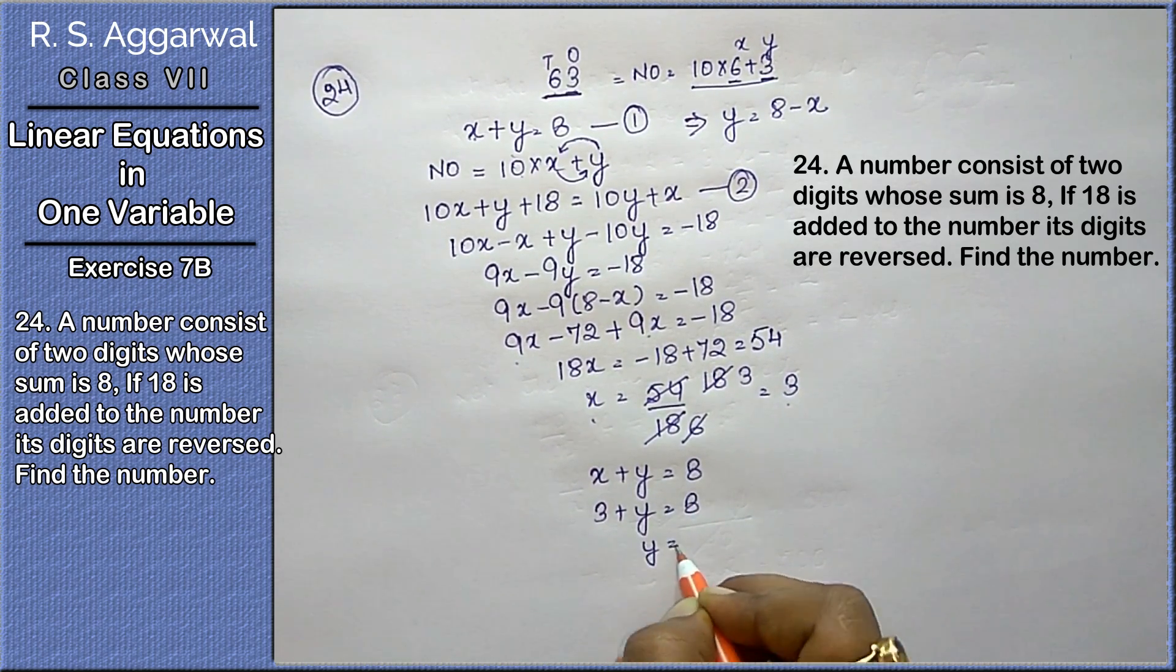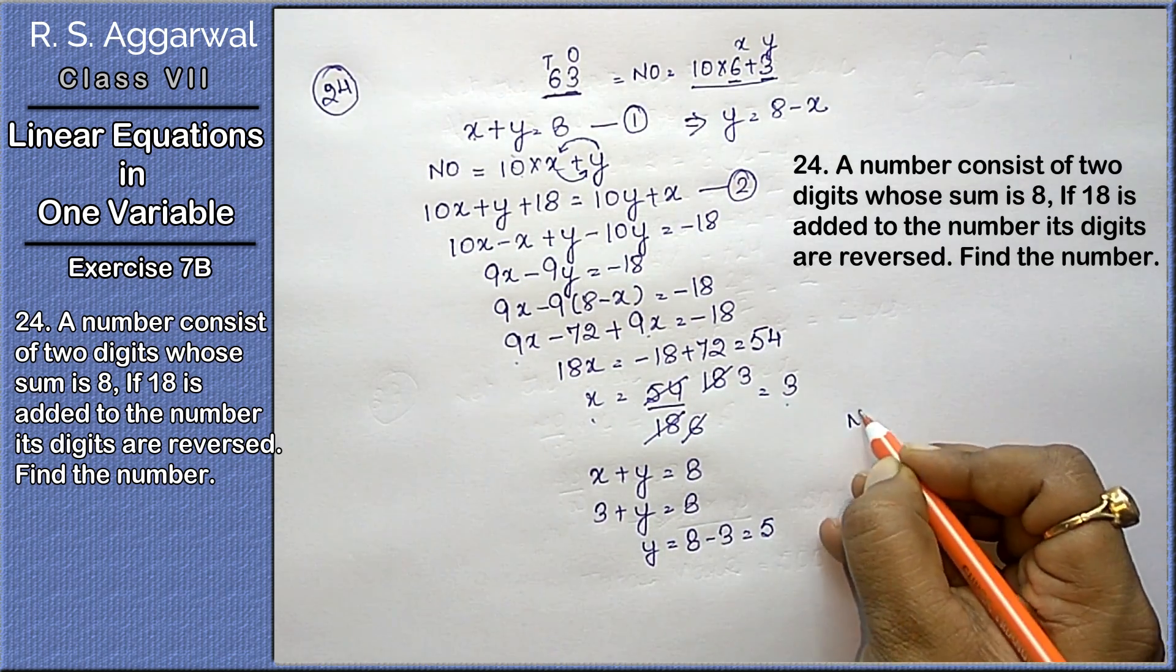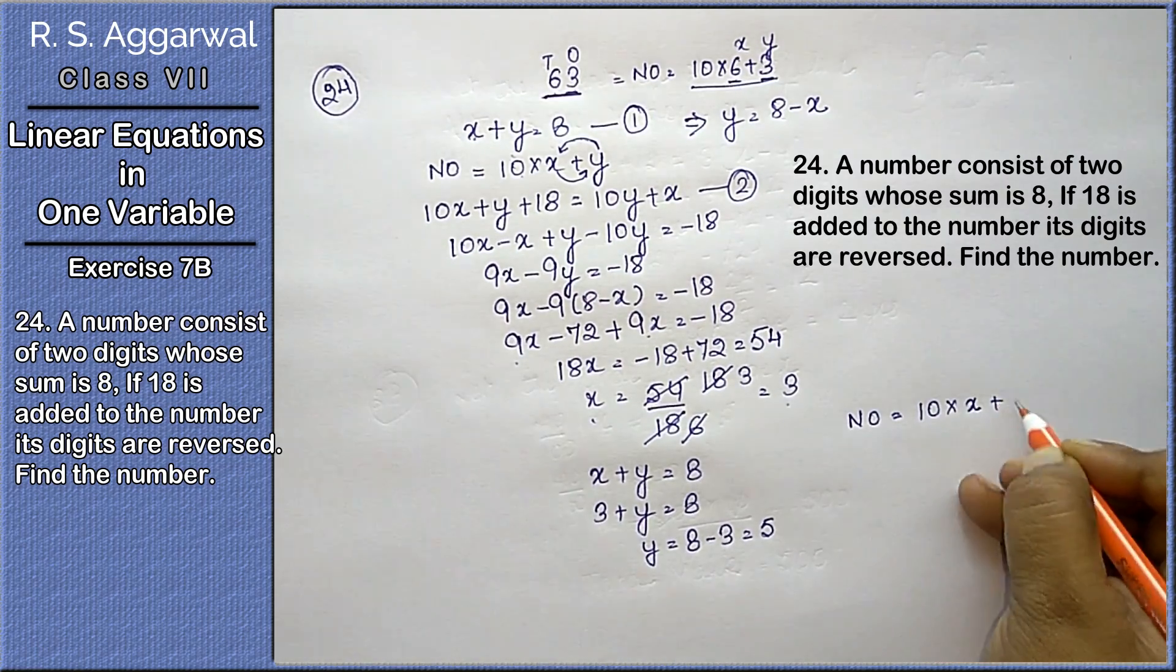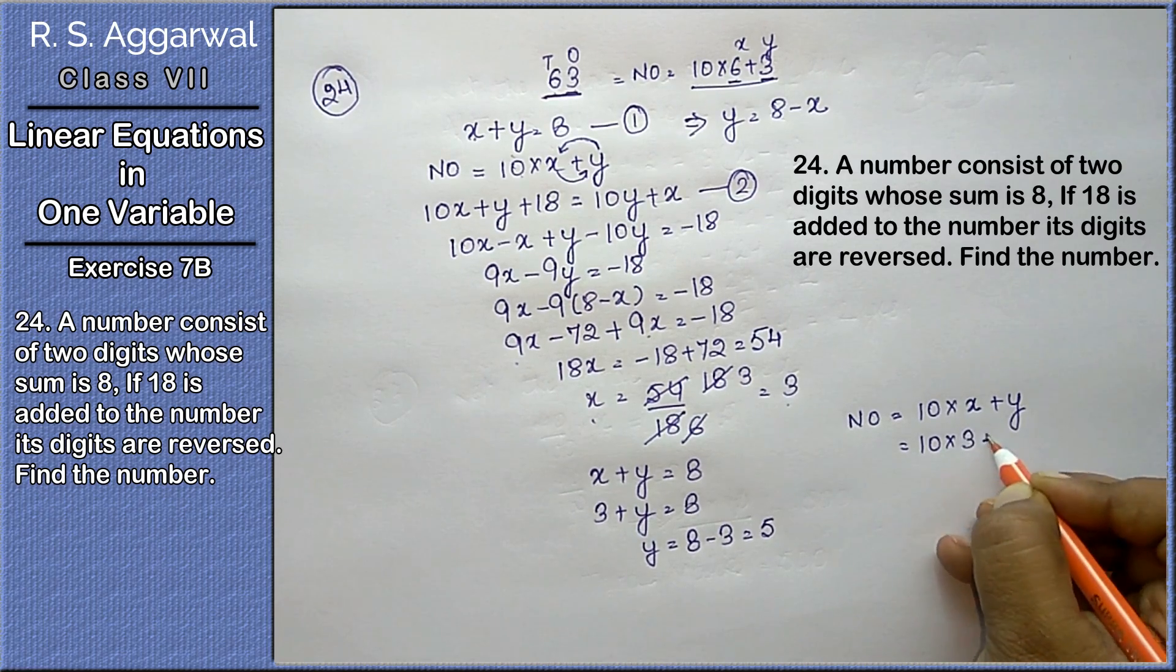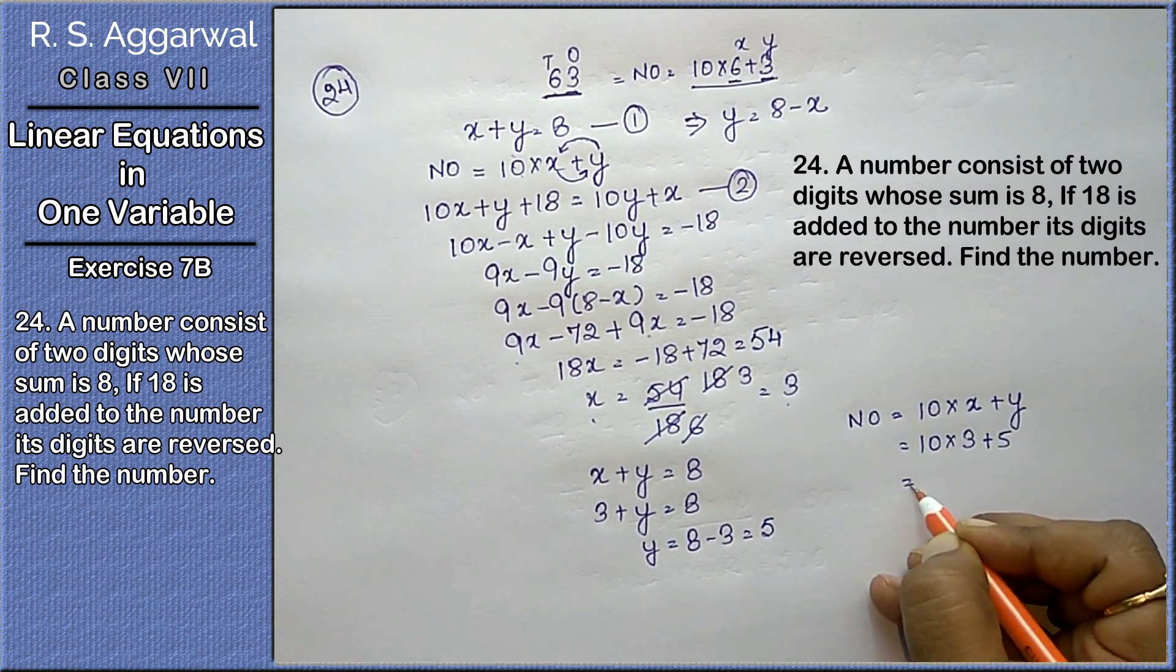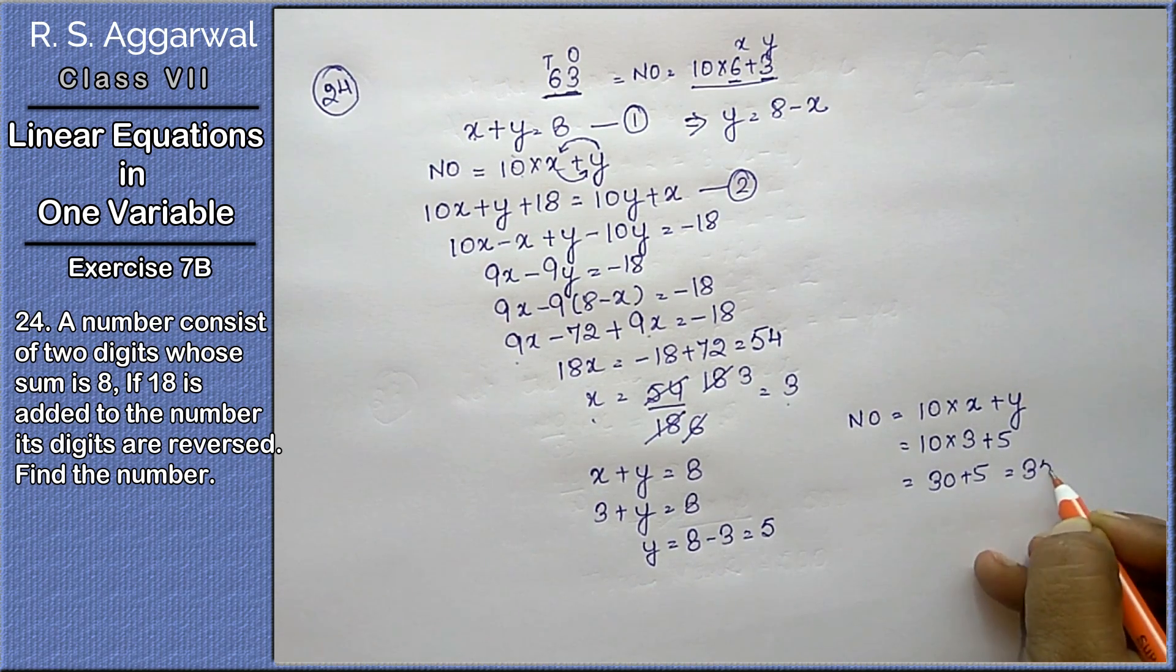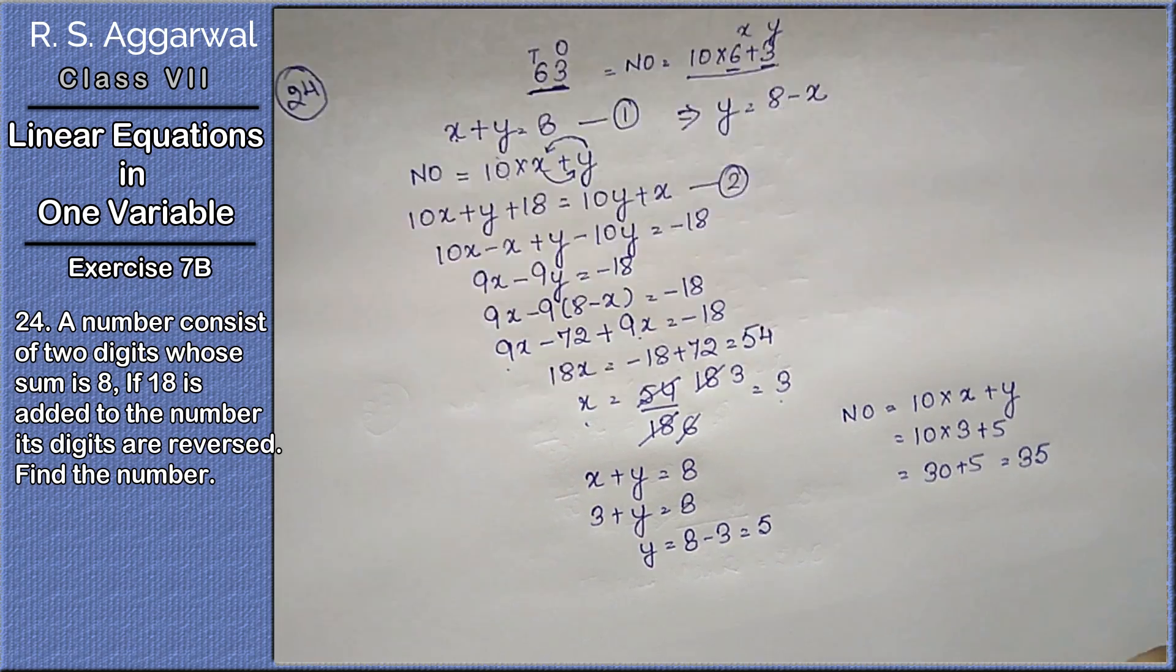So what is the number? The number was 10 into x plus y. x's value is 3, y is 5. That means 30 plus 5 equals to 35 is the number. Okay friends, let's do the next question.